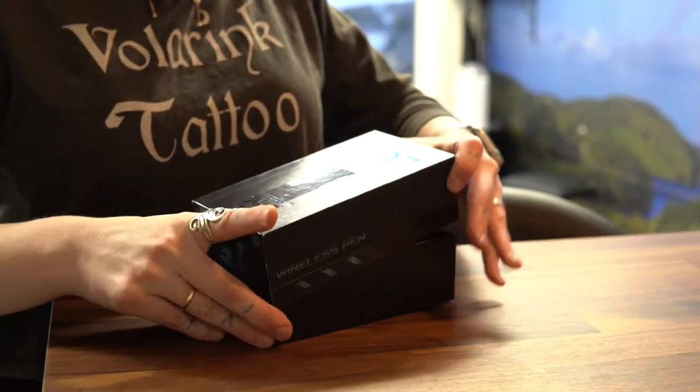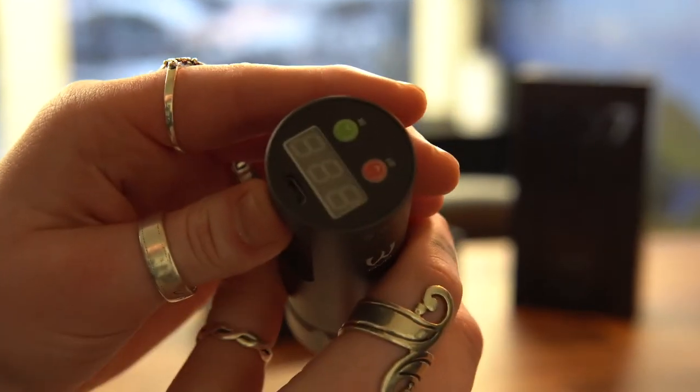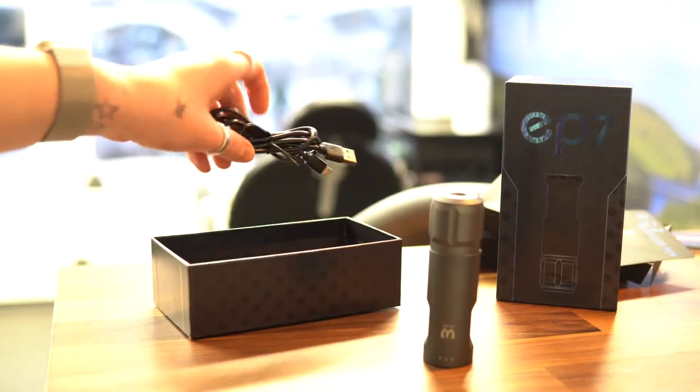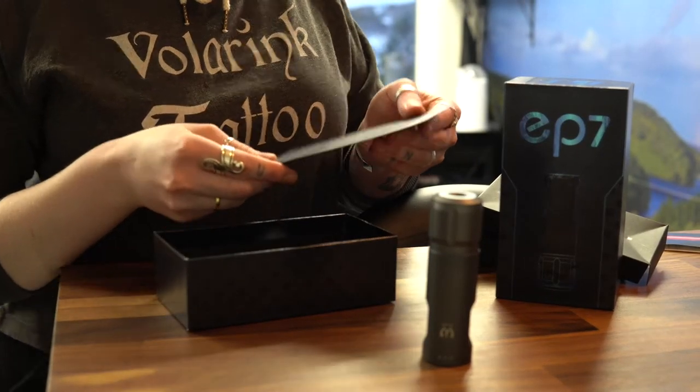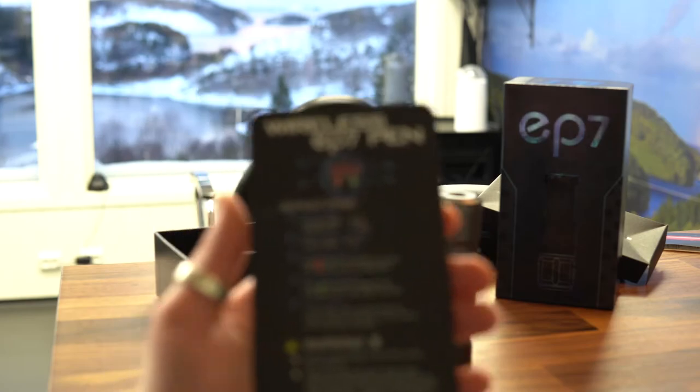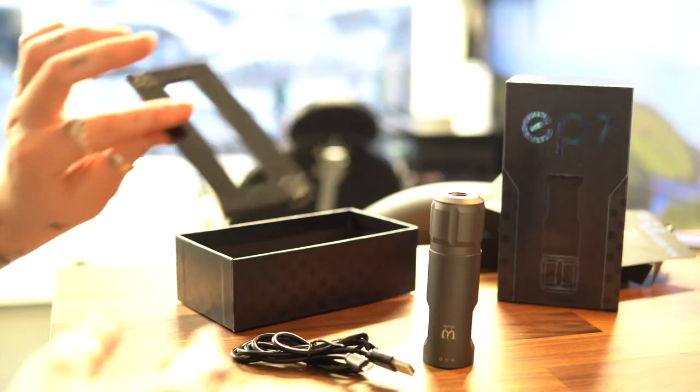As you can see in the box, it was the pen, of course the tattoo machine, and the charger, like a cord. And we have this one sheet of instructions and O-rings and a little tray to put it in.